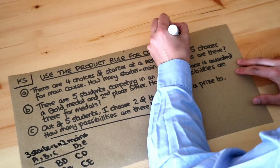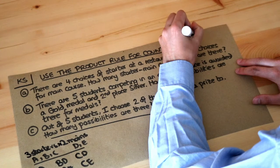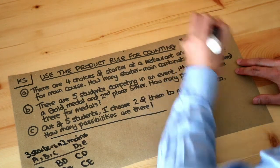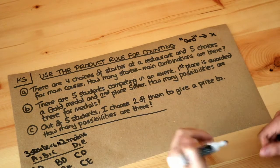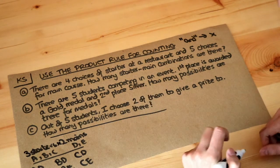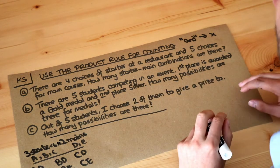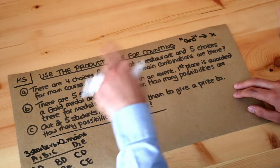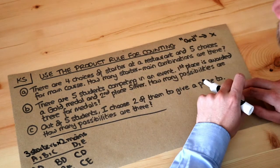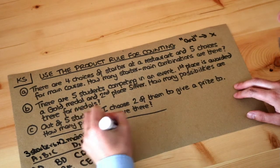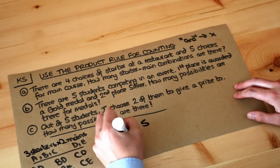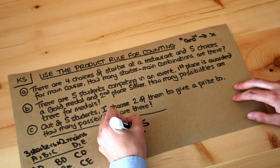So the key here is that whenever you use the word and then you times. So that's just the same with probability. If I wanted the probability of one thing and the other thing you would times them together provided they were independent. So it's the same kind of thing here. So if we had four choices of starter and we picked one of five main courses, I've used the word and here, so therefore I would just times the four and five together to get the total number of combos which is 20.